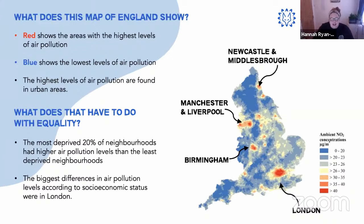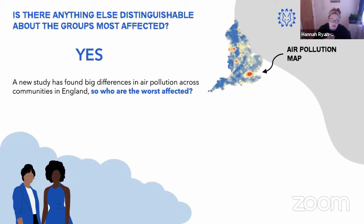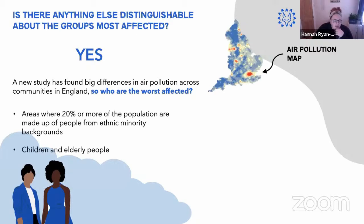We know air pollution impacts people according to wealth — but are there other distinguishable factors? Yes. A new study found big differences in air pollution across communities in England. Areas where 20% or more of the population are from ethnic minority backgrounds — Black people, Asian people, or others identifying as ethnic minority — are worst affected, as are children and elderly people.